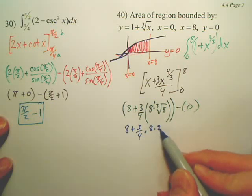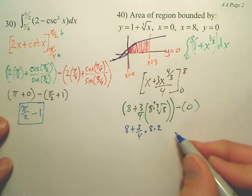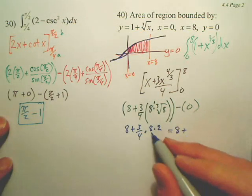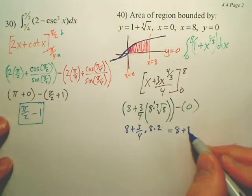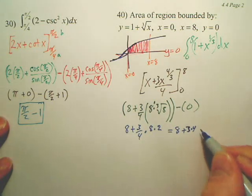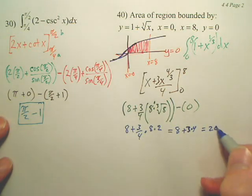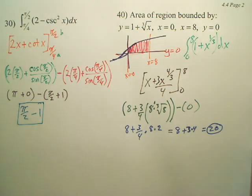And what's 8 times this? Isn't that 16? 16 divided by 4 is... 16 divided by 4 is 4. So, wouldn't that be 3 times 4? This looks like 20. Area into the curve.